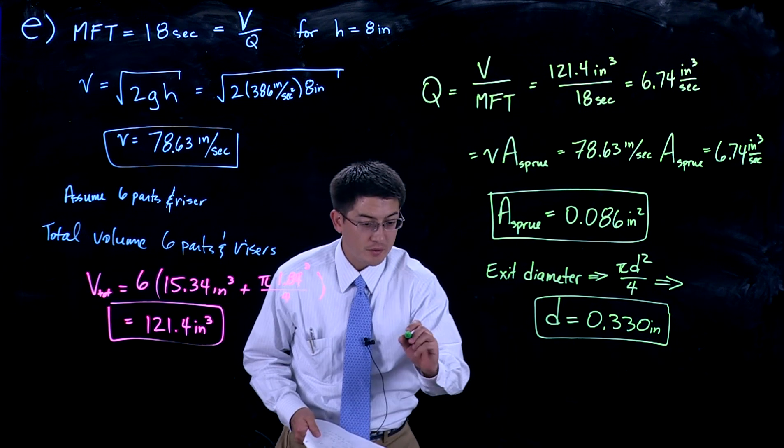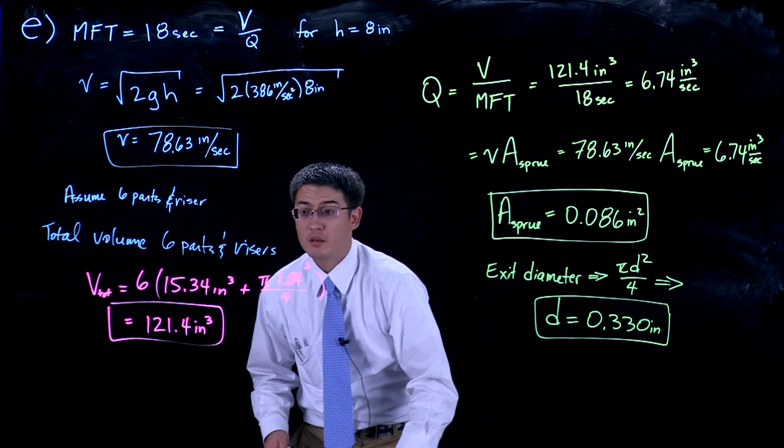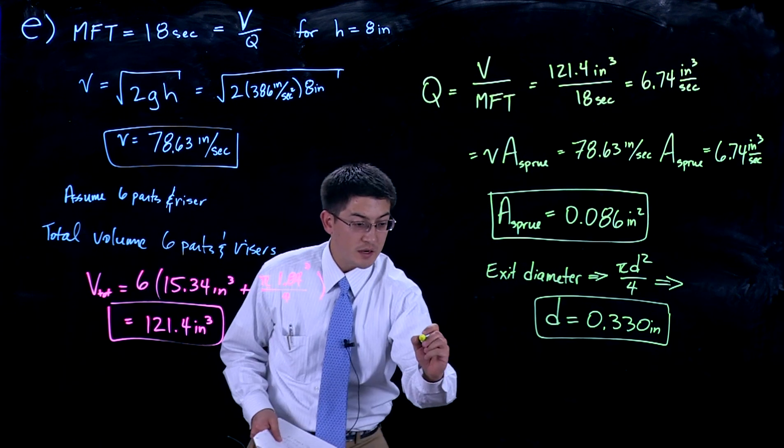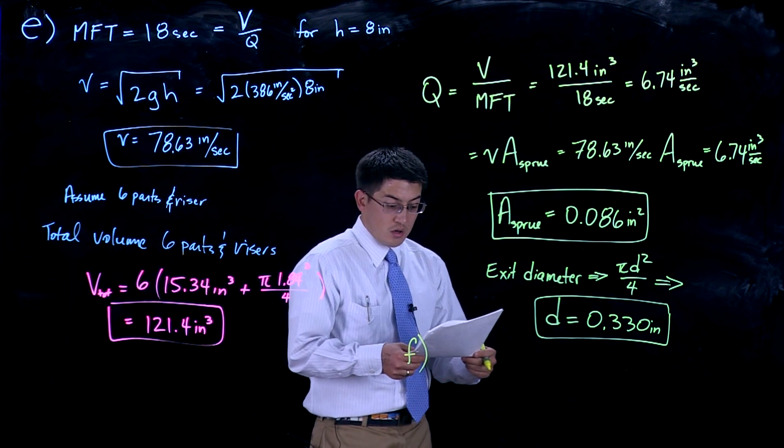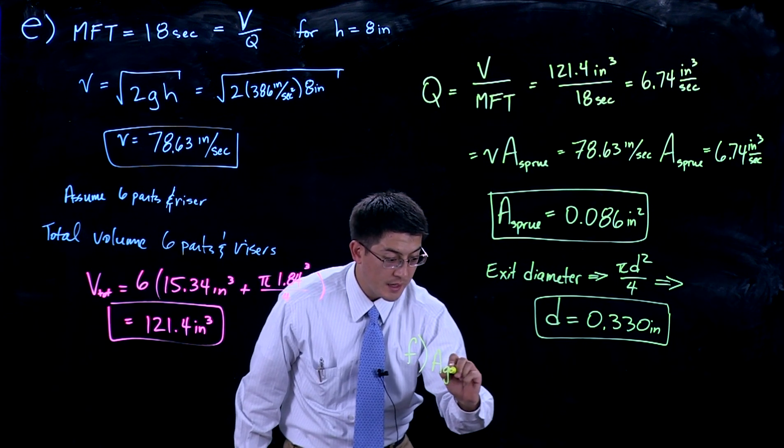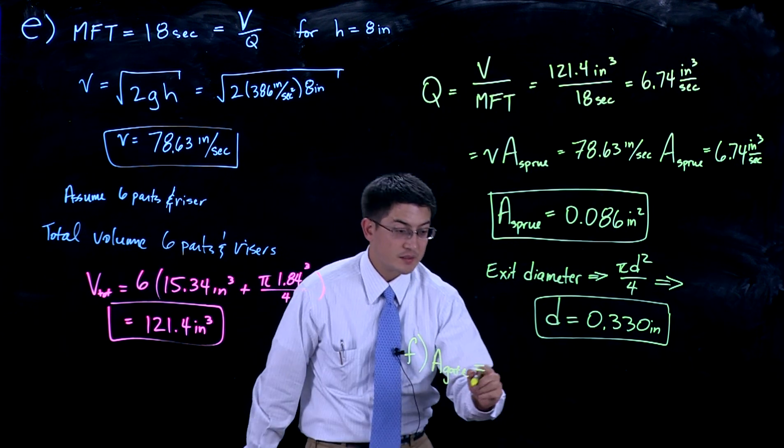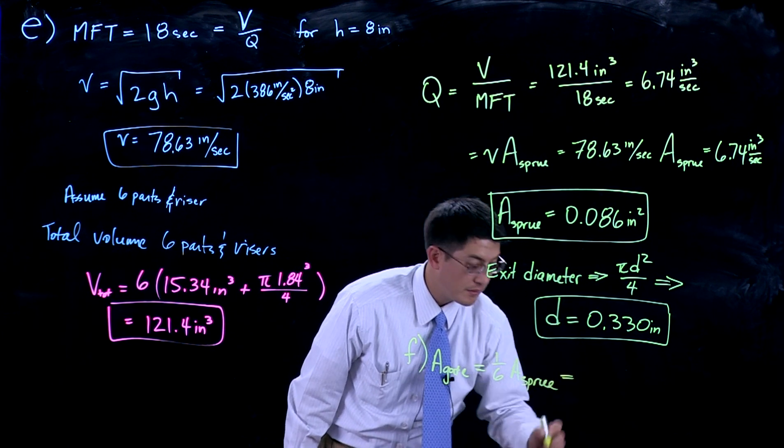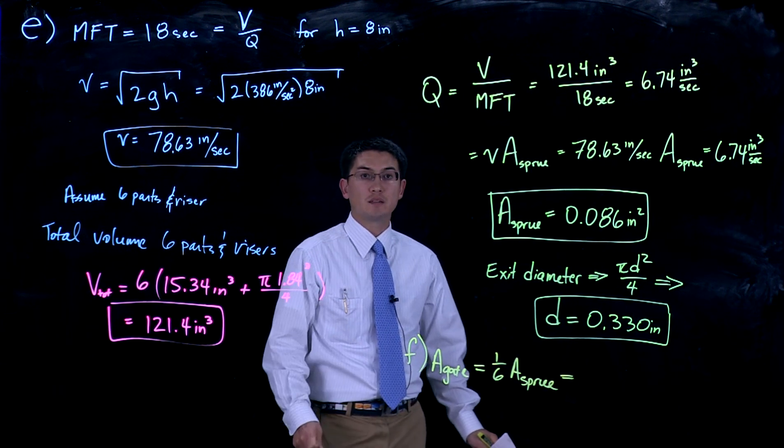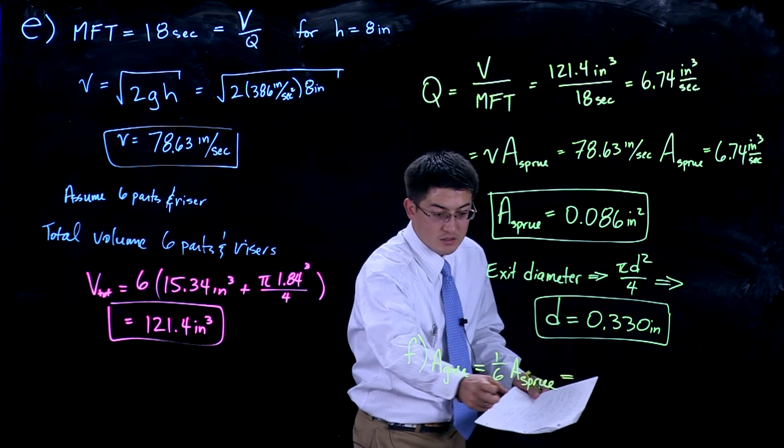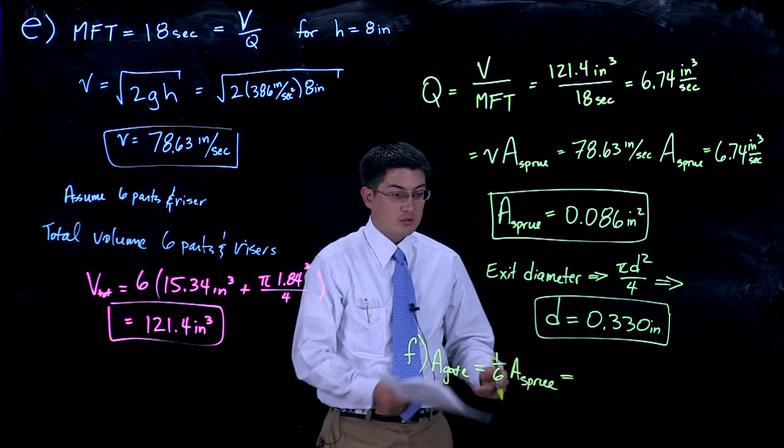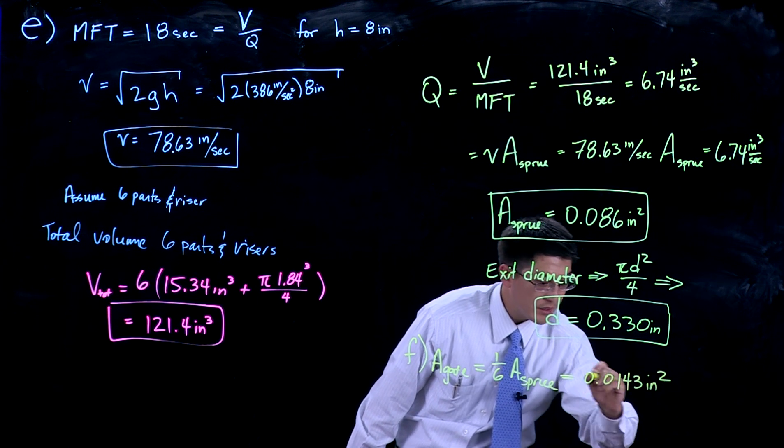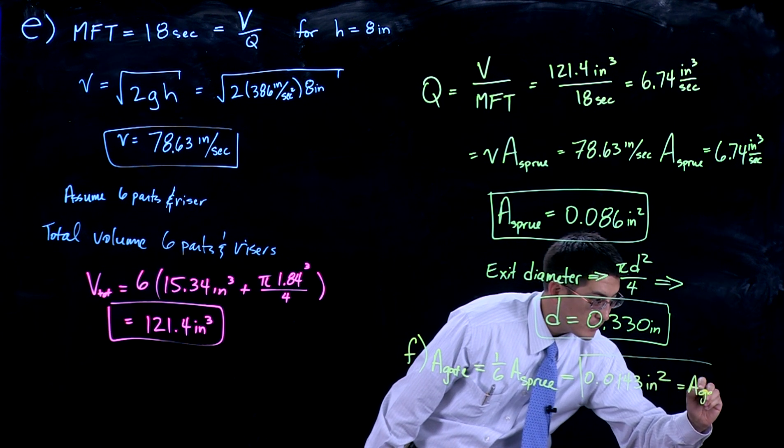The last part, I believe this was part f, asks for you to size out the cross-sectional area of the gate. We had already said that the gate cross-sectional area should be a sixth of the size of the sprue cross-sectional area. If the sprue cross-sectional area is 0.086 square inches, we want the gate cross-sectional area to be one sixth of that, so then it should be 0.0143 square inches. This is the area of the gate, each gate.